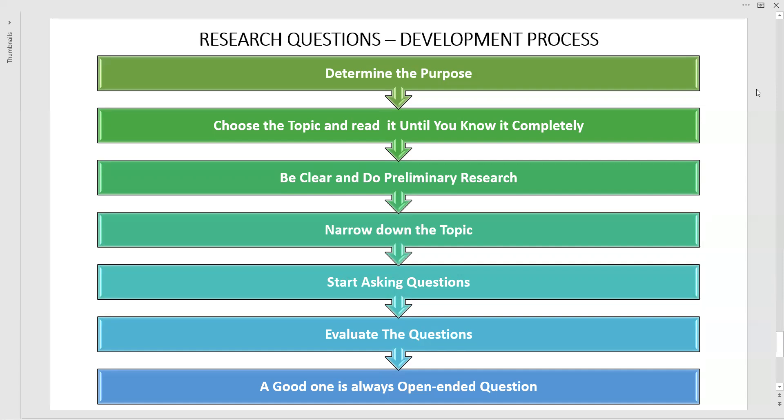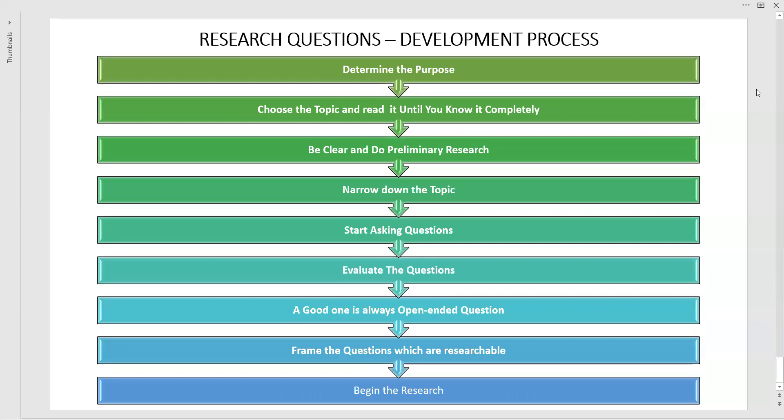We have to frame questions which are researchable. Once we have narrowed down, asked the questions, and made them open-ended, we have to write the question by making the best word choices. Make them as simple as possible. The purpose of our research must reflect in the question. The question must outline a clear assignment we would require to complete in a certain period of time. It should be a researchable question, and once we feel that, we should begin our research work.